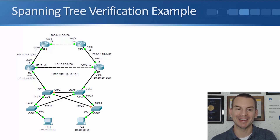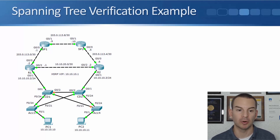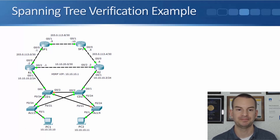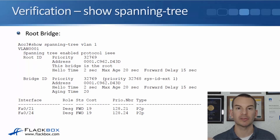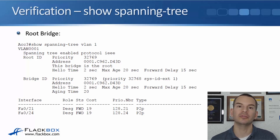In the real world you're not going to have a diagram which shows you exactly how spanning tree is configured, so how do we figure out how the spanning tree is laid out in a production network? That's what we're going to cover here using the same example topology. The swiss army knife command for checking your spanning tree configuration is 'show spanning-tree'.